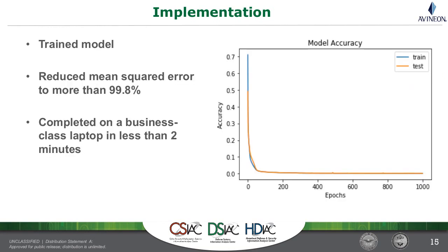This is a typical way to look at neural network accuracy. The model is trying to model normal system performance, and you can see it's able to do that quite quickly and very effectively. It reduces the mean squared error of the output versus the input to a very low amount, so we were very satisfied with the initial result. Notably, we were able to do this without a significant hardware investment — I just did this on my business class laptop, and it took less than two minutes to train the network. For neural network problems with large data sets, that wouldn't be possible, but for this one it was something we could approach.